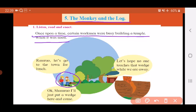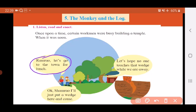Now let's see what those men are saying. Ram Rao, let's go to the town for lunch. So this man is telling the other man Ram Rao, jo uska naam hai, chalo hum bahar jaake lunch karte hai. So what does he reply? Okay Sham Rao, I'll just put a wedge here and come. Let's hope no one touches that wedge while we are away. Wedge is this small piece of wood that is placed in between the cut that is there in the log.